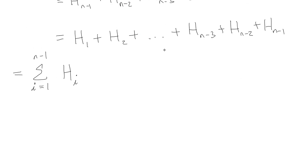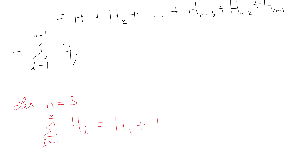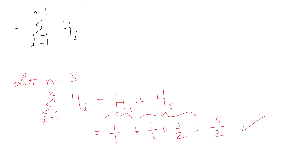We can verify with n = 3: i goes from 1 to 2, giving H_1 + H_2 = 1 + (1 + 1/2) = 1 + 3/2 = 5/2. That matches our earlier example — which isn't a proof by induction, but it's at least a demonstration that I probably didn't drop any negatives.